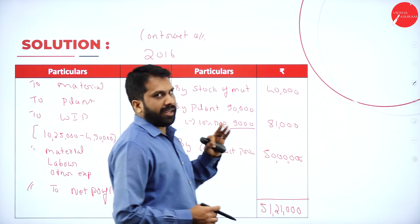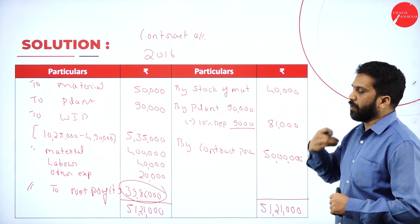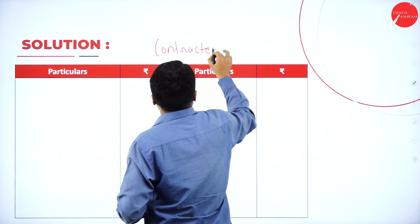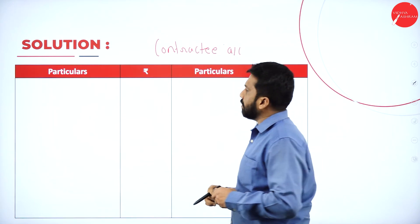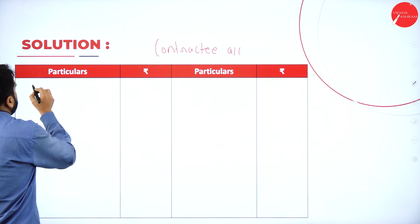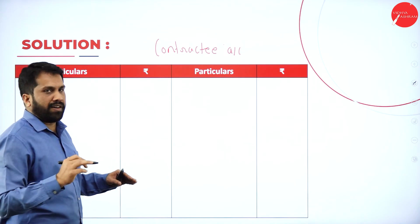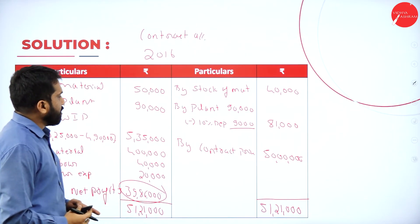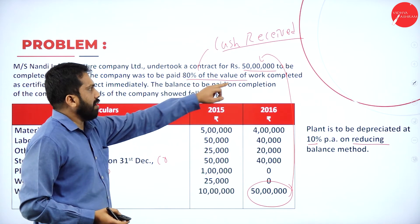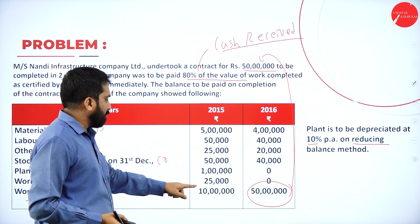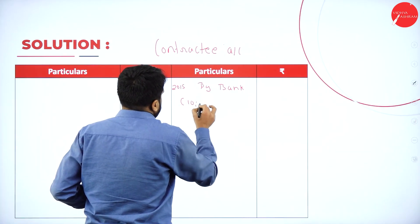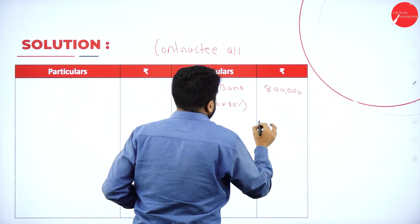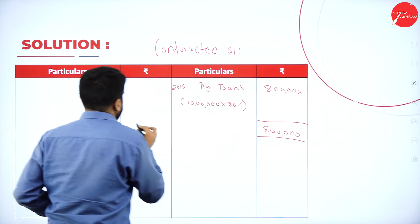Once done with the contract account, we go for the contractee account. In the contractee account, we go year by year. For 2015, by bank: they mentioned 80% of work completed. First year work certified is 10 lakh, so 10 lakh into 80% gives 8 lakh collected.